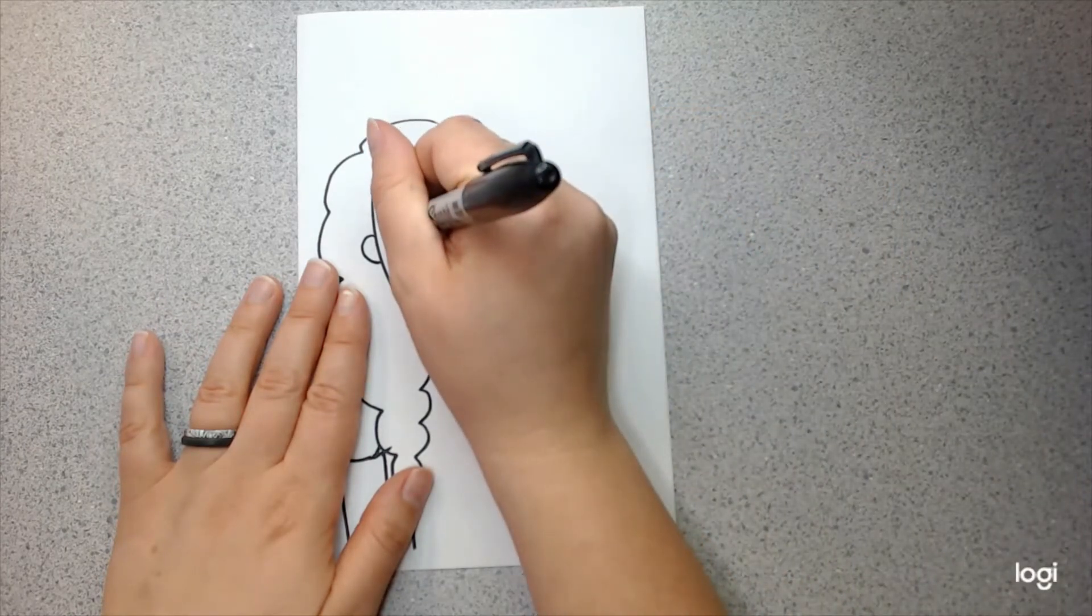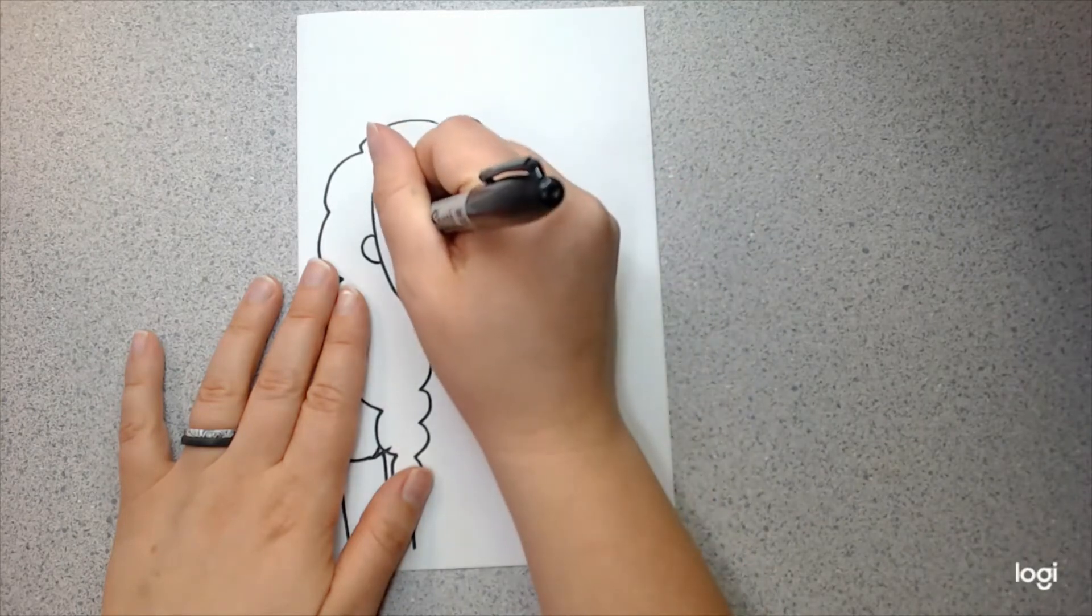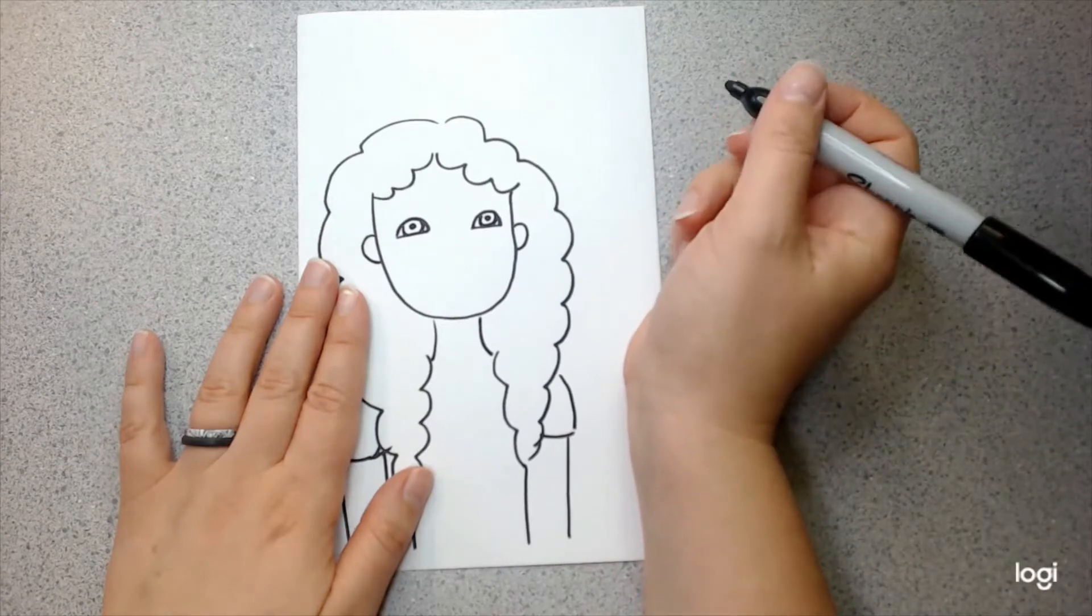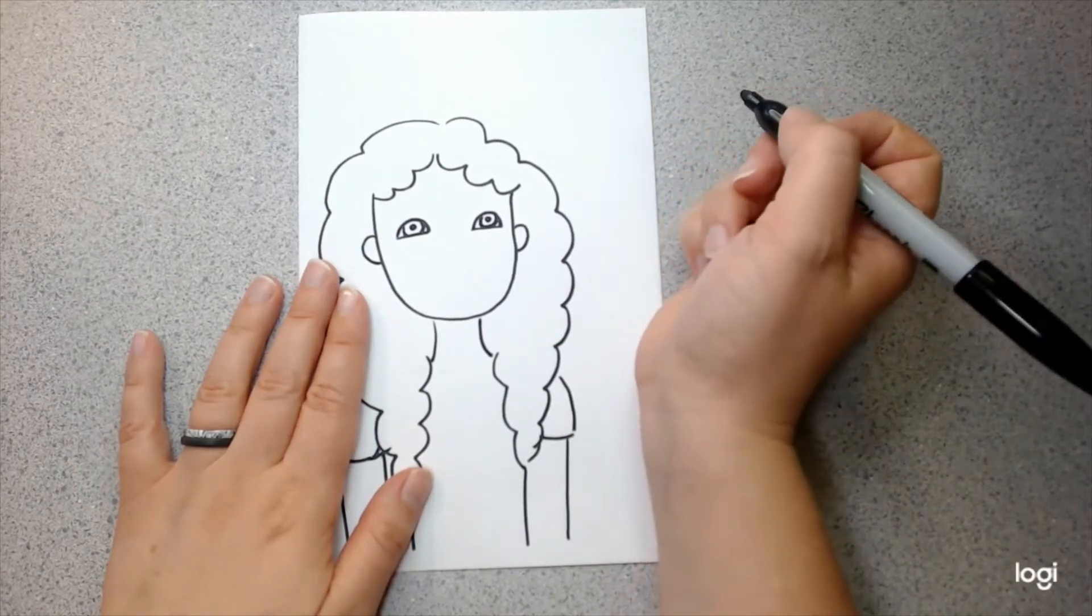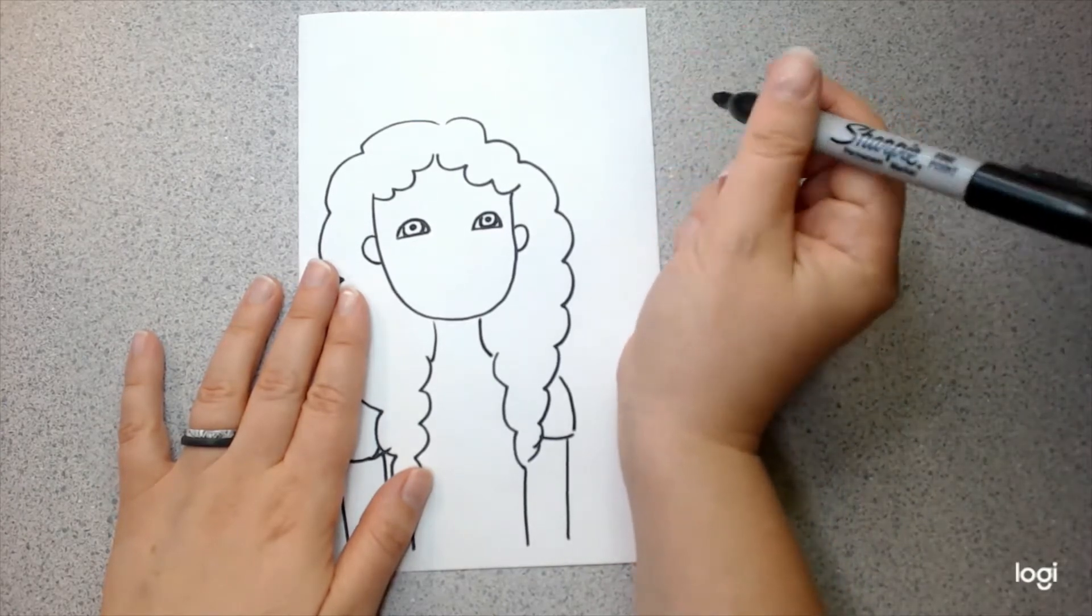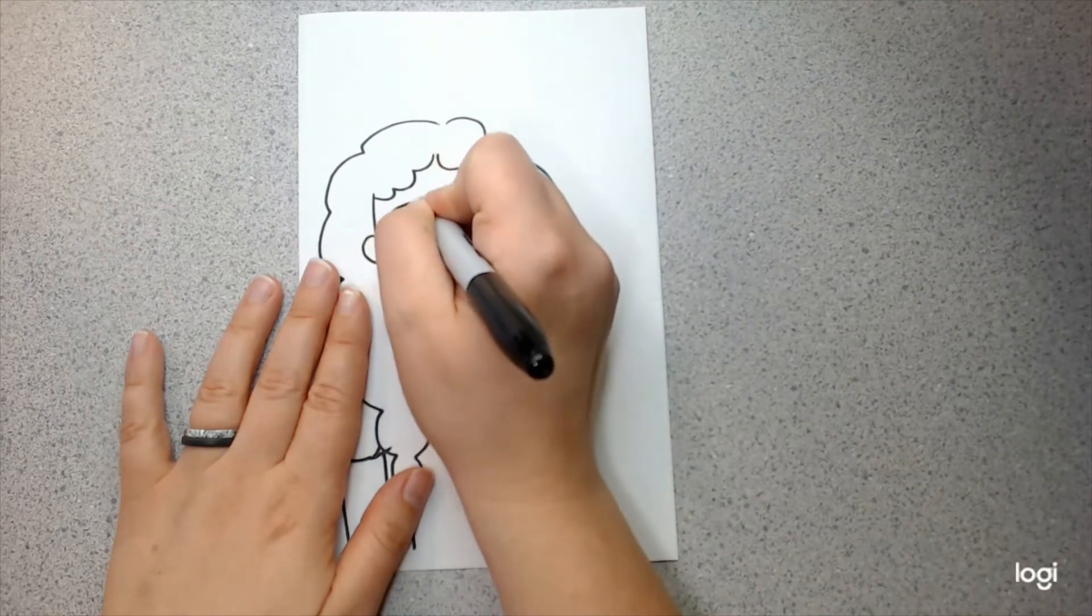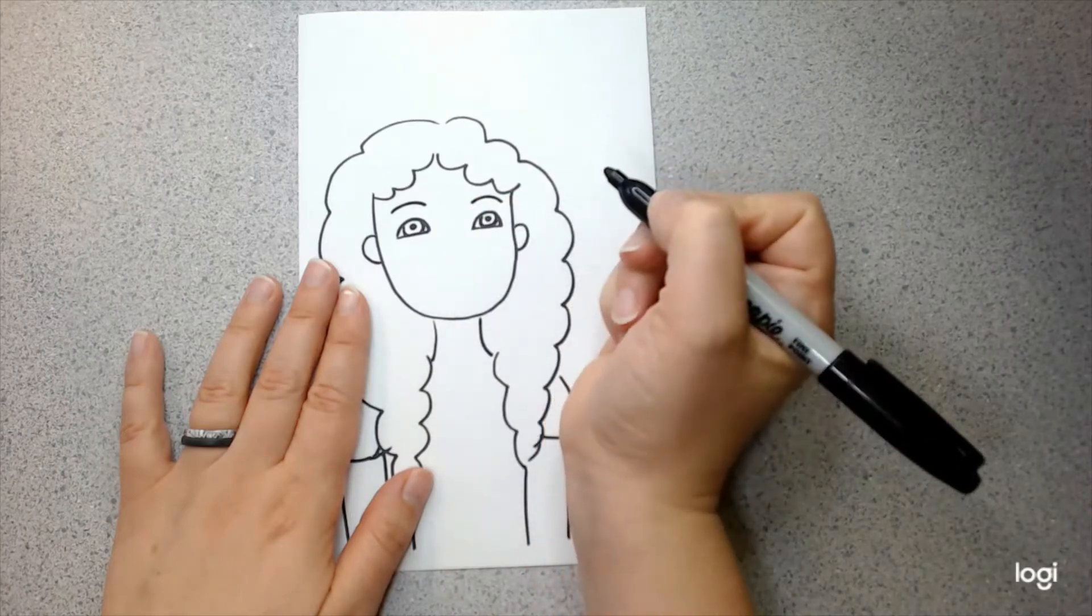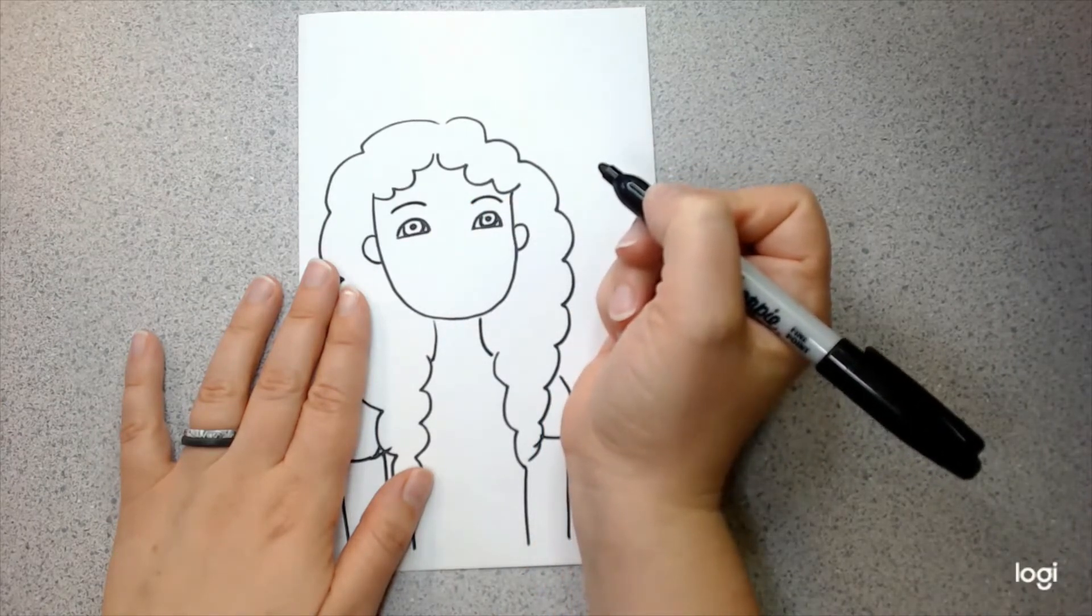There we go. Then I'm going to do a dot at the center of each one for my pupil. The pupil is the black spot at the center of our eye that helps us see. Now, my face needs a little bit more work. I'm going to add some eyebrows. So, I'm just going to draw two slightly curved lines like that for my eyebrows.